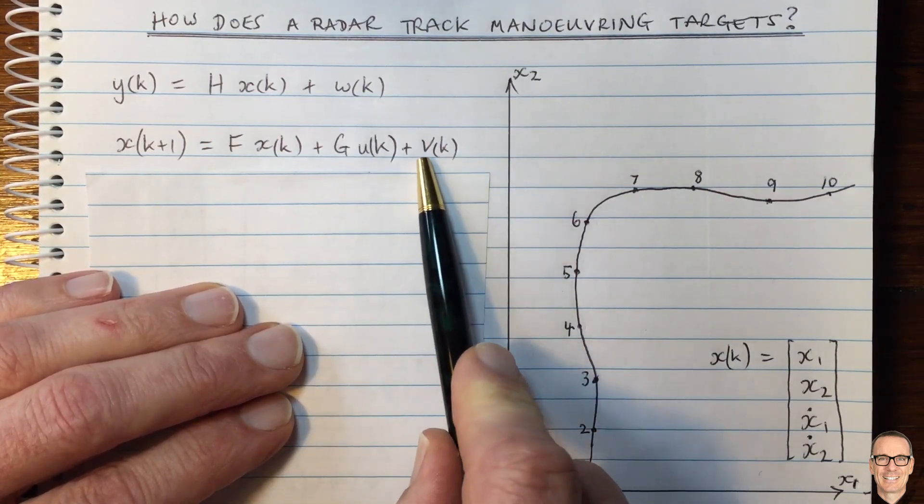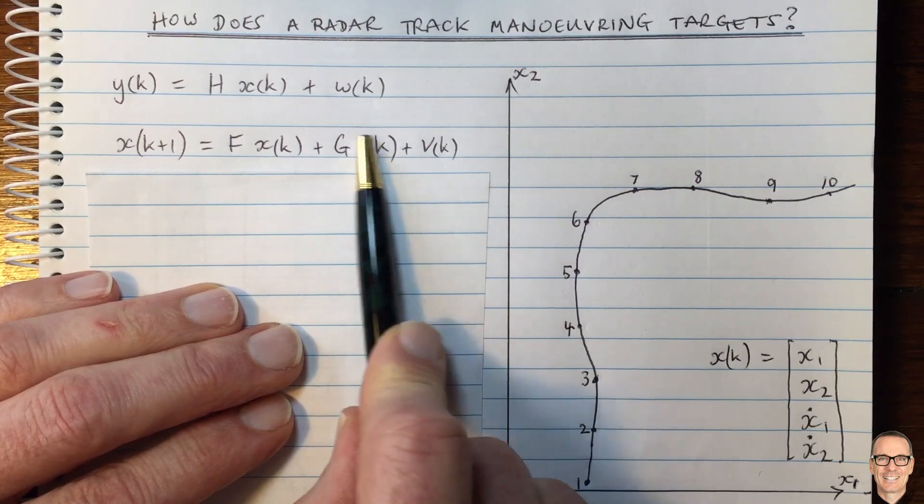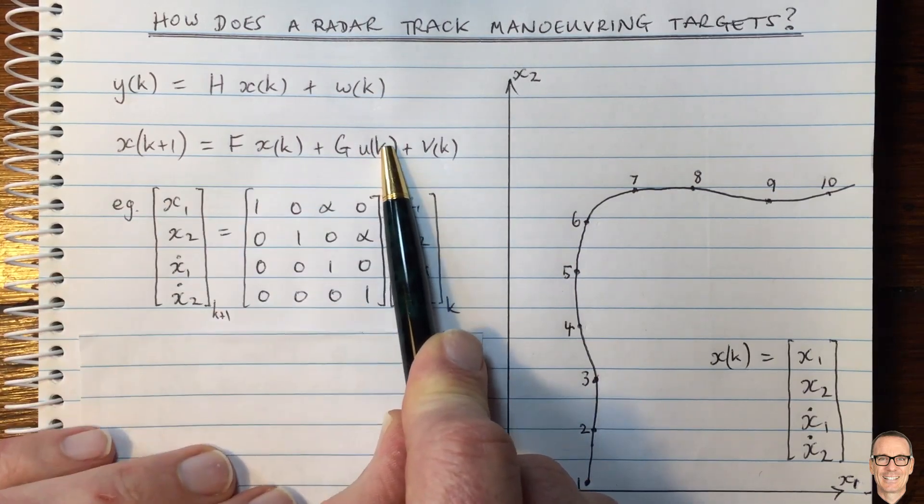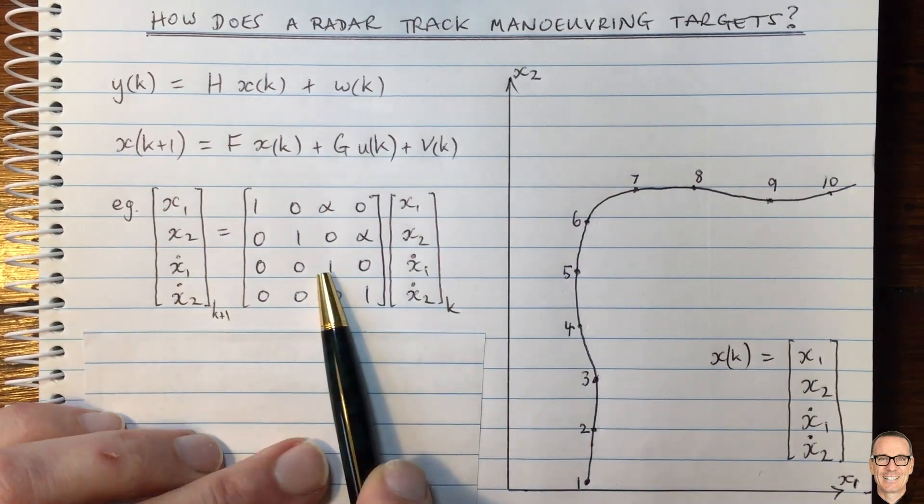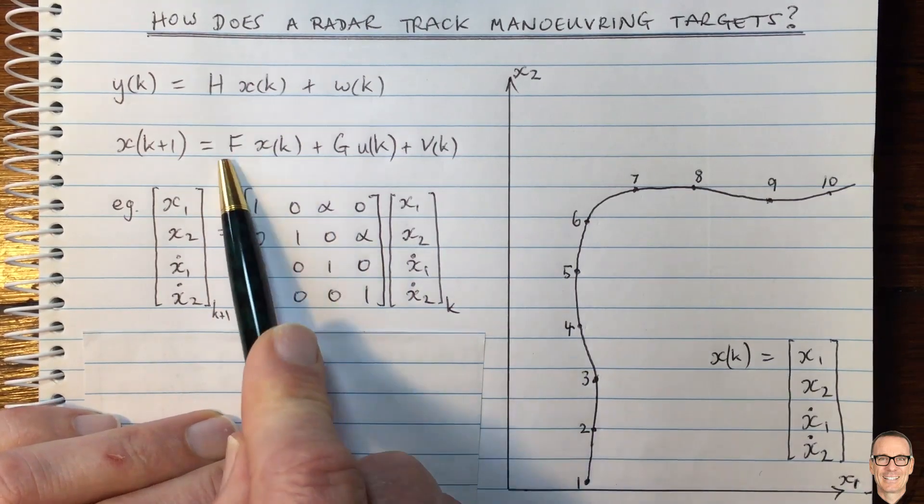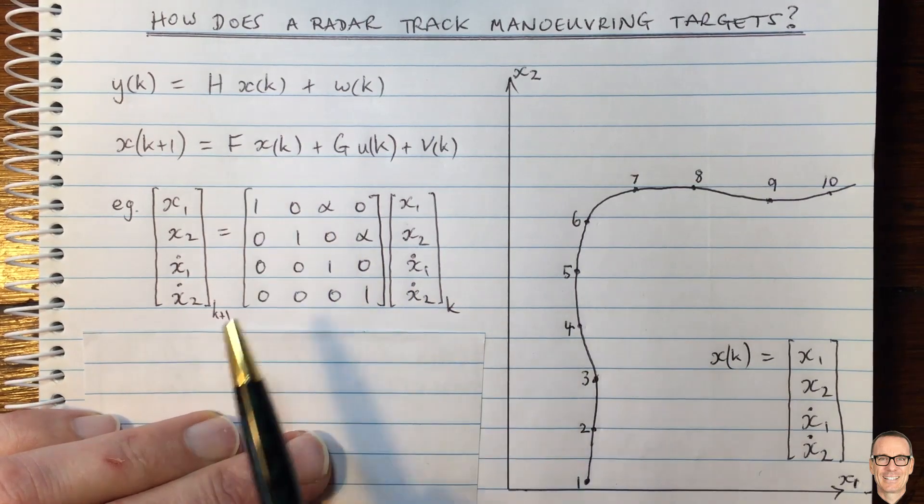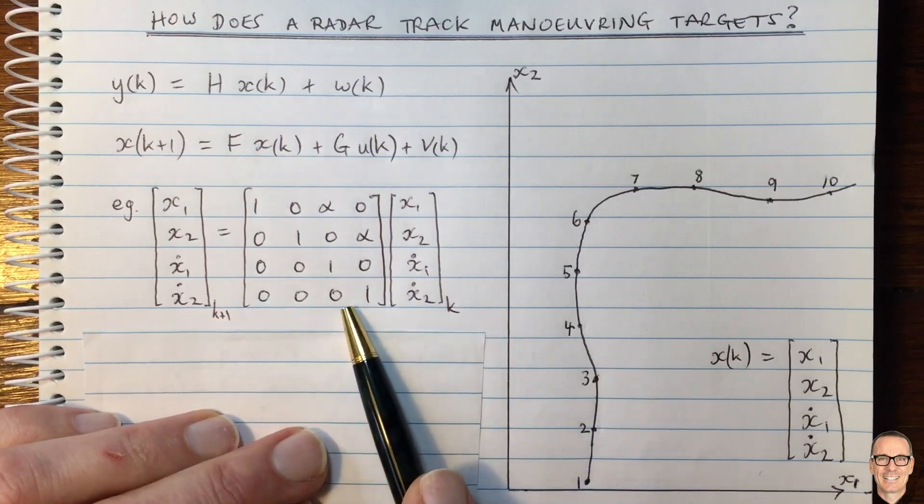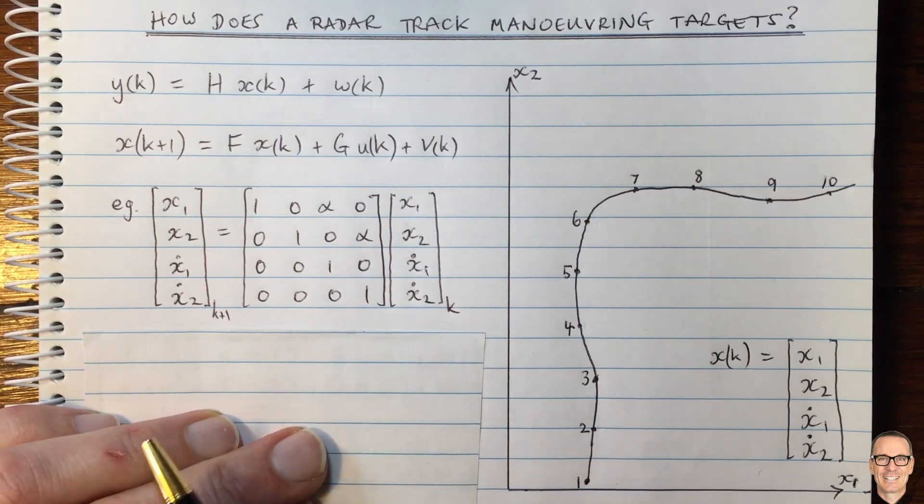So let's think of an example for a minute when there's no system noise and when there's no maneuvers. Well here is a classic example of moving in a straight line. So this matrix F here, if this had this form here, then you can see it's going to result in moving in a straight line.